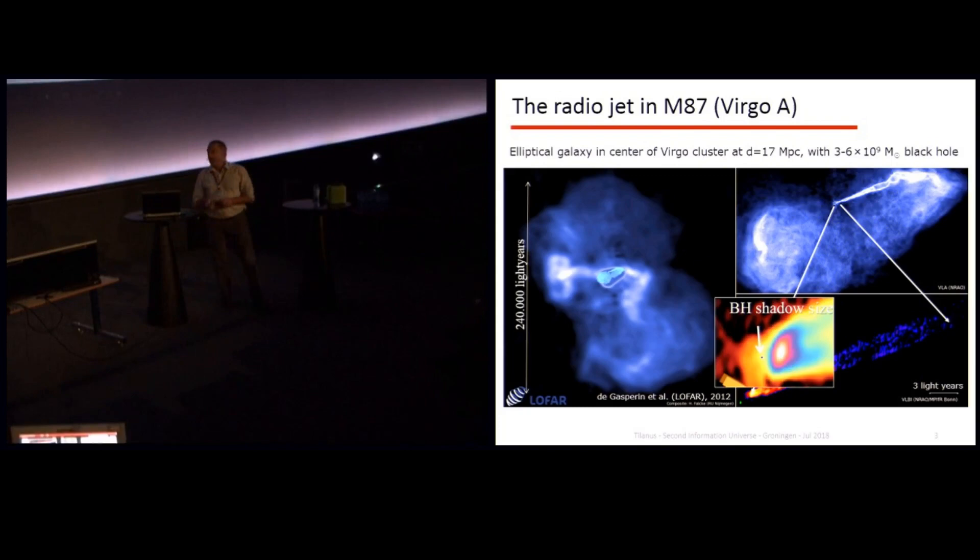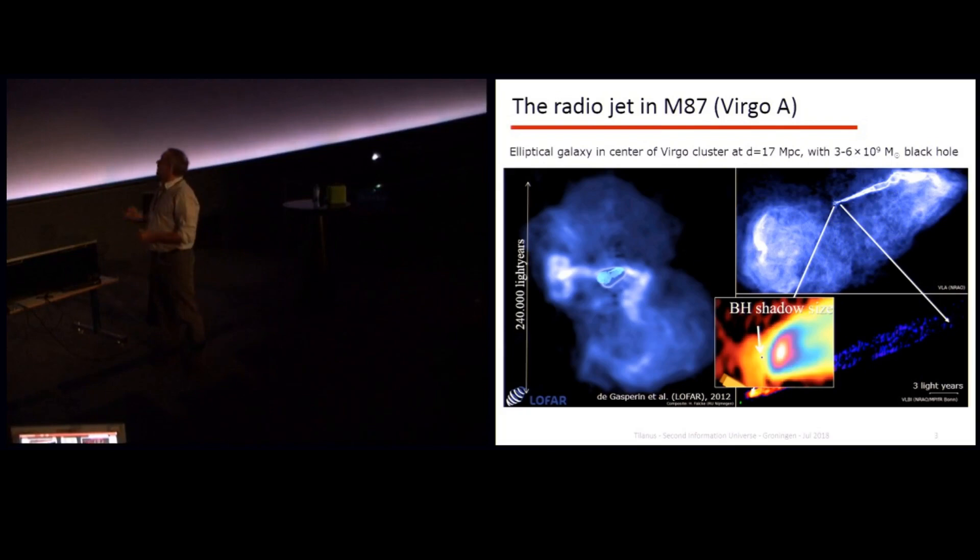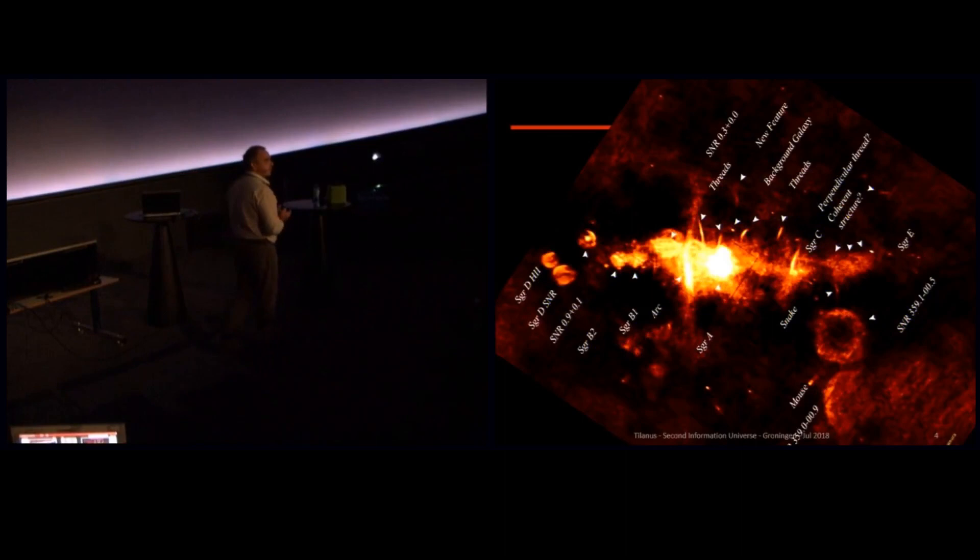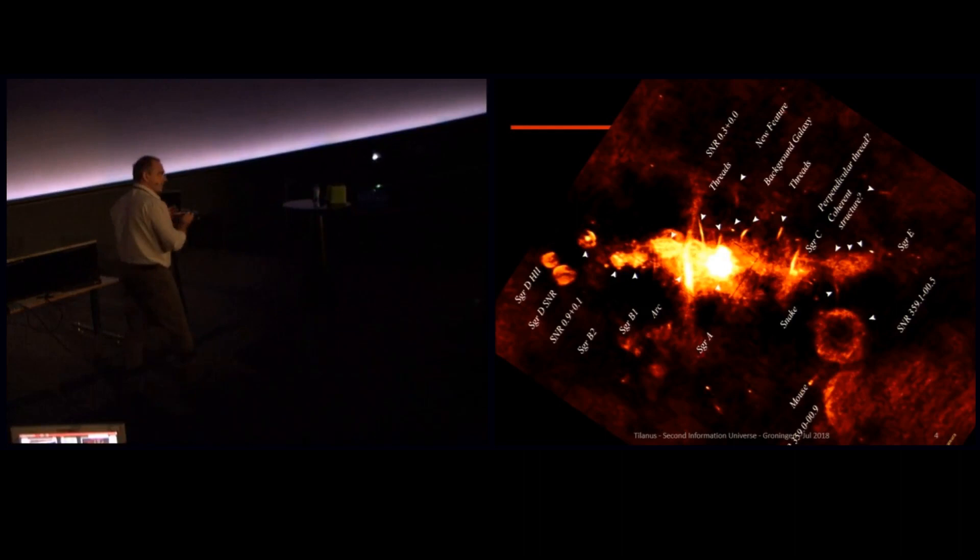Another place where we believe we can see a black hole is actually in the center of our own galaxy. In the 1970s it was discovered that in radio emission in the center of our galaxy, right there, there is actually a very bright source, and that has been since then, of course, there has been very active observations, research.